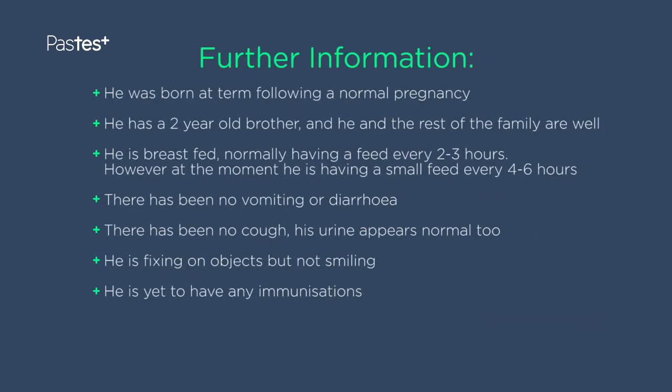Getting back to the case — he was born at term, had a normal pregnancy, and there's a two-year-old brother at home, with everyone else well. This is a breastfed baby typically feeding every two to three hours, but now only having a little feed every four to six hours. No vomiting, no diarrhoea, no cough, and his urine appears normal. He's fixing on objects but not yet smiling, which is normal at three weeks, and hasn't had any immunisations yet as these don't begin until around two months.